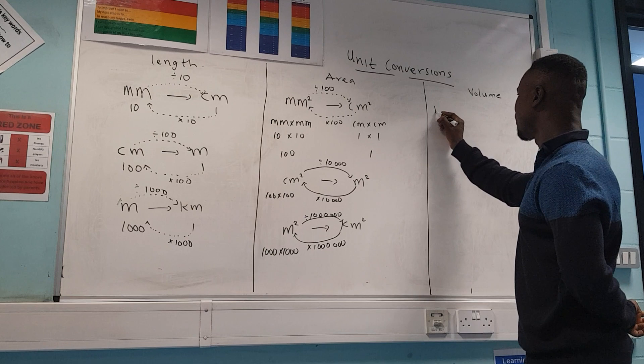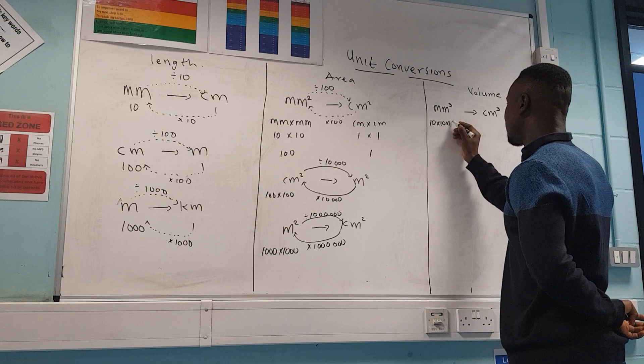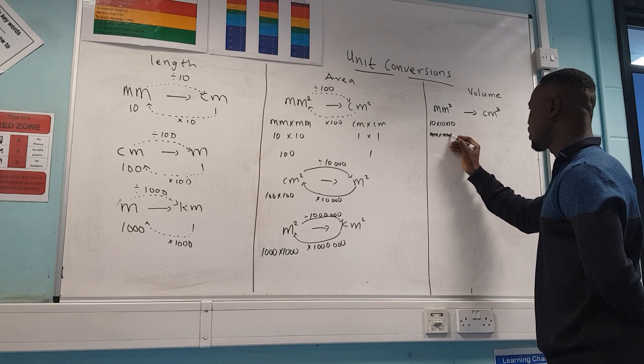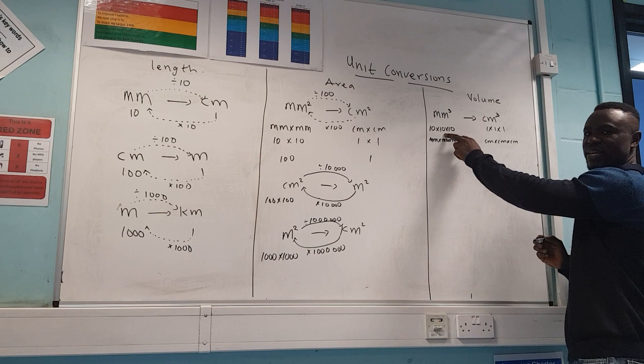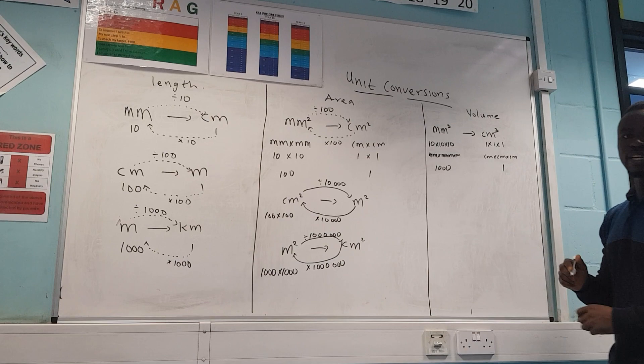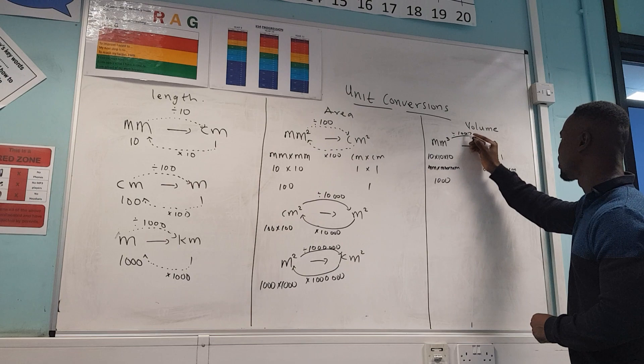The same applies to volume. Moving from millimeters cubed to centimeters cubed: millimeter was 10, so cubed means 10 times 10 times 10, which equals 1,000. So in volume, a thousand millimeters cubed gives you one centimeter cubed. Therefore, instead of dividing by 100, you divide by 1,000, and instead of multiplying by 10 or 100, you multiply by 1,000.